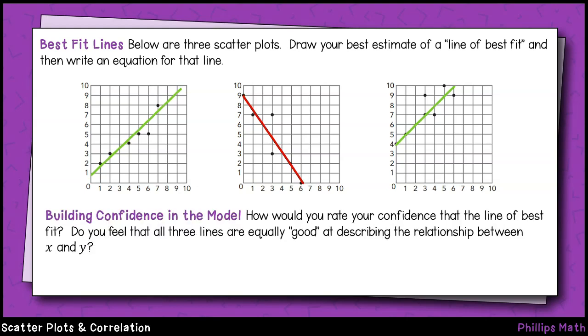How would you rate your confidence in each line of best fit? In other words, do you think that all three lines are equally good at describing the data set they are drawn through? I think we can all agree that the left line is very accurate. None of the data points stray very far from the line. And that's mostly true for the second one as well, though we do have a little bit more deviation from the line, particularly at these lower x values. The third line has a similar issue with the larger x values straying further away from the line.